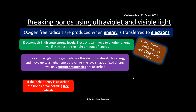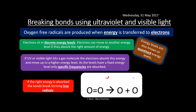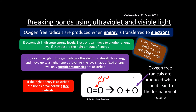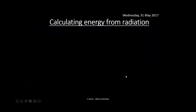If the right energy is absorbed, the bonds break and free radicals are created. For an oxygen molecule O2, the right amount of energy excites that electron into the upper level, breaks the bond, and forms oxygen free radicals. The oxygen atom — written as O — is the same as an O dot radical. This can then be used in the formation of ozone as we've seen before.